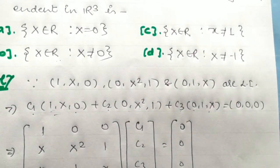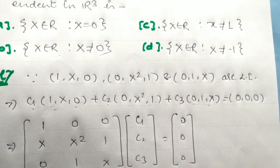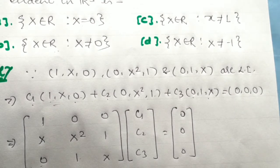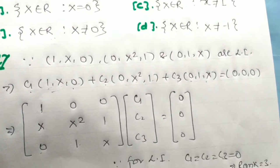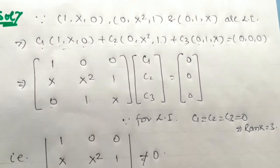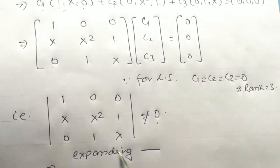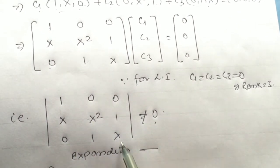We set up the matrix with c₁, c₂, c₃ and expand the determinant. Expanding, we get x² times (x - 1).